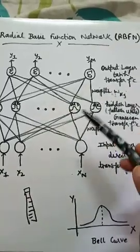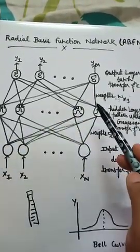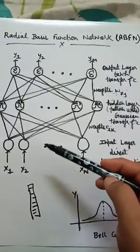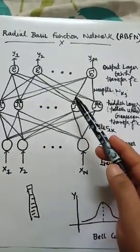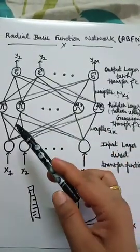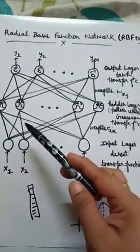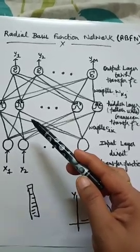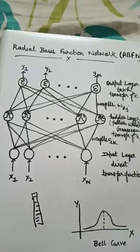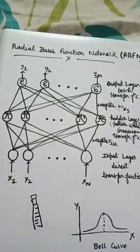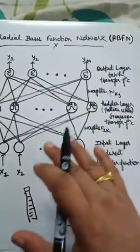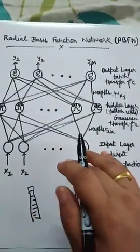By weighted sum, what do we mean? That means an output node associates a weight value with each of the RBF neurons and multiplies the neuron's activation by this weight before adding it to the total response. Because each output node is computing the score for different categories, every output node has its own set of weights.